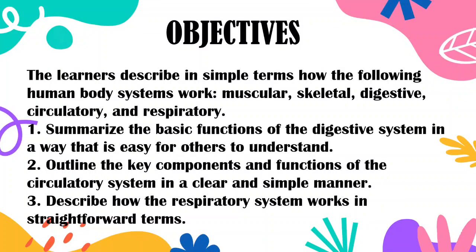Day 2. Objectives: The learner described in simple terms how the following human body systems work — muscular, skeletal, digestive, circulatory, and respiratory. Summarize the basic functions of the digestive system in a way that is easy for others to understand. Outline the key components and functions of the circulatory system in a clear and simple manner. Describe how the respiratory system works in straightforward terms.